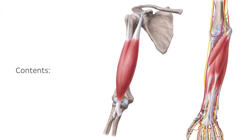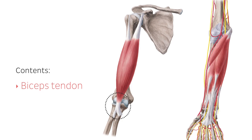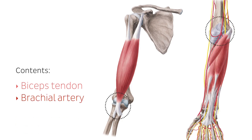The cubital fossa contains the following structures: the biceps tendon, the brachial artery, the median nerve, and the radial nerve. The radial nerve is not always considered part of the cubital fossa, but passes underneath the brachioradialis muscle, dividing into its deep and superficial branches.